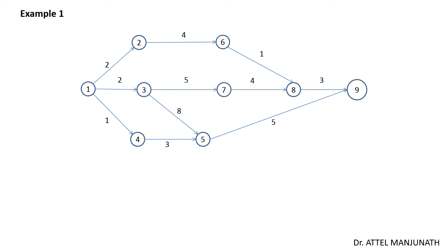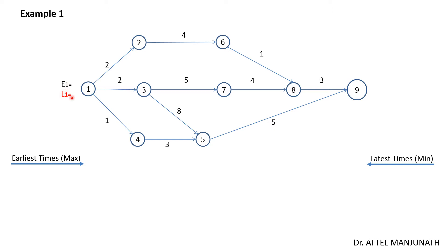The earliest times will be calculated in the forward pass computation — in this direction — and the latest times will be calculated in the backward pass computation — in this direction. For each node, you need to identify both the earliest time and the latest time. Similarly for every event, you calculate earliest as well as latest timings for all nodes given in the network.